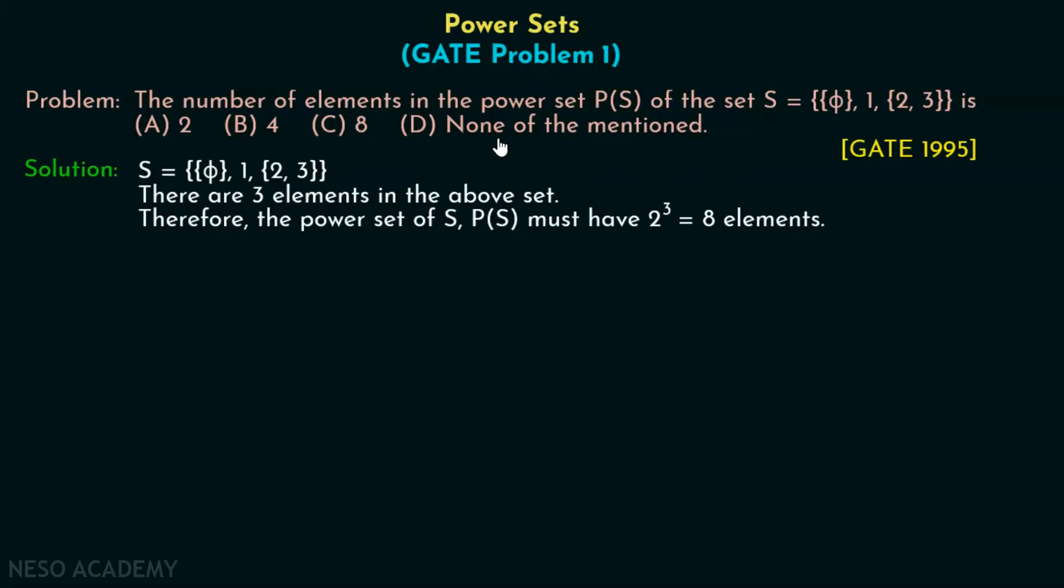But let's just list down all the elements of this power set for better understanding. The power set of S must include φ, which must always be included in the power set. Apart from this, we will create sets with one element. Here the first element is a set which consists of φ. We will include this whole set within another set. Then we can form a set with this element.